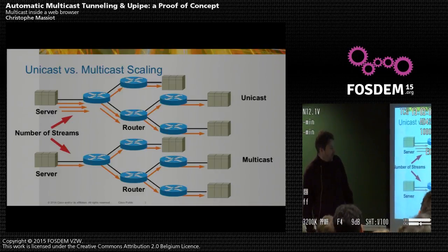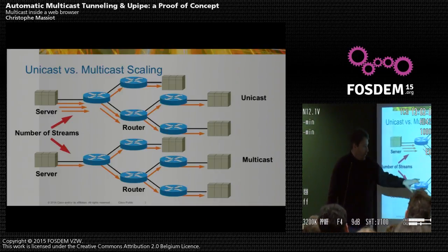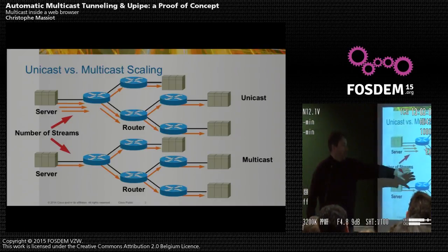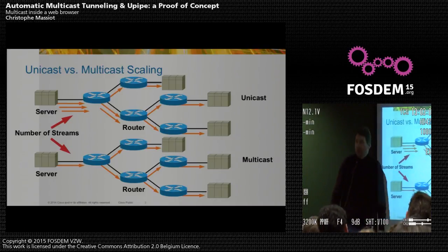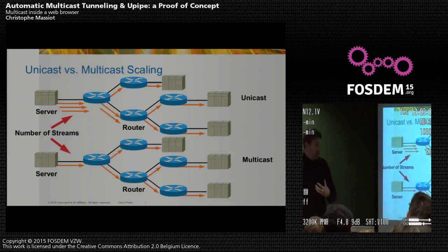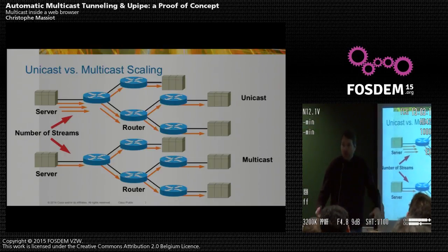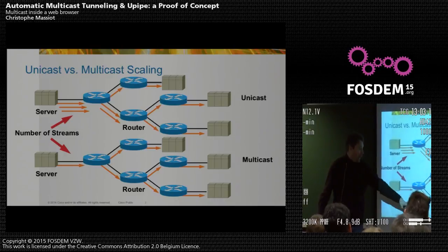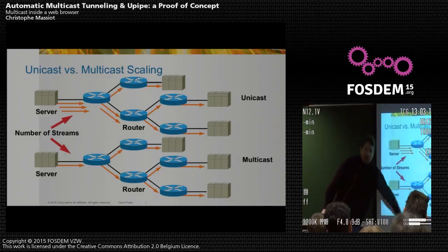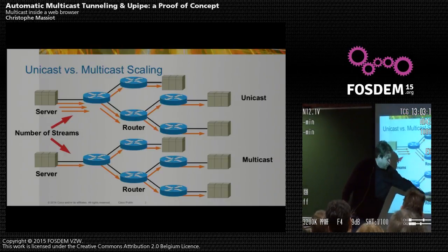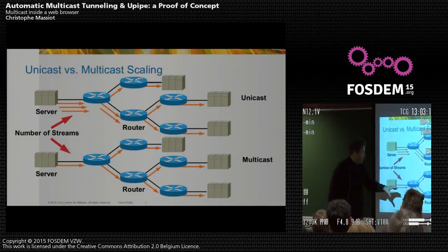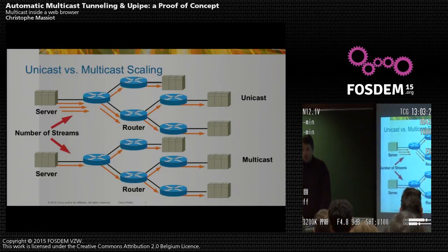In multicast, the client asks the local router to send the data. If the router doesn't have the data, it asks the upstream router, and so on. If the router already has the data, it just duplicates it in the correct way but doesn't duplicate all the way to the server. So it's much more bandwidth efficient, and for big streams like IPTV, it's very useful.